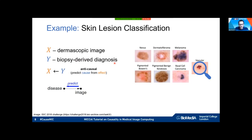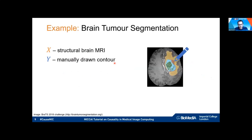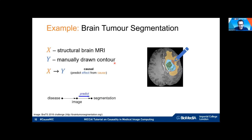What about brain tumor segmentation? The input is a structural brain MRI and the labels are manually drawn. The audience's response was almost overwhelmingly 'causal' with one vote for anti-causal. We believe this is clearly a causal relationship, because the annotations are directly an effect of someone actually drawing contours on the image.